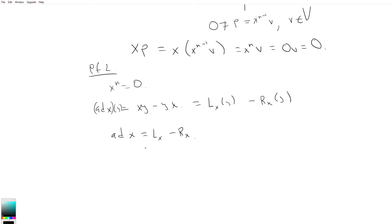So because they commute, they encourage us to consider raising this to some power. So in particular, I'm going to choose ad x to the 2n, which is this n here. And you'll see why momentarily. So ad x to the 2n is equal to L_x minus R_x to the 2n.